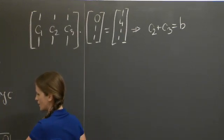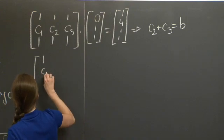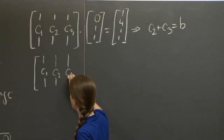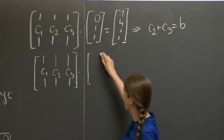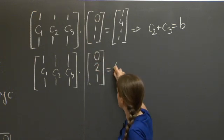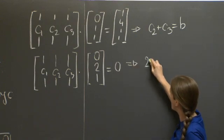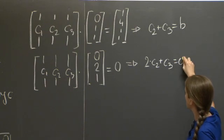Let's turn our attention to A times xs equals 0. This says that C1, C2, C3 times xs was defined to be 0, 2, 1 equals 0. In other words, 2 times C2 plus C3 equals 0.